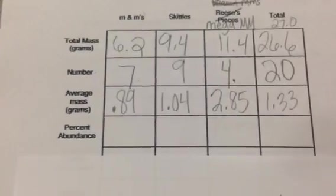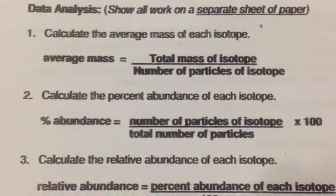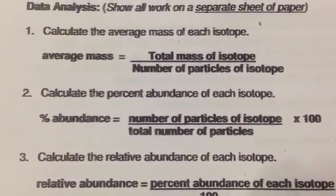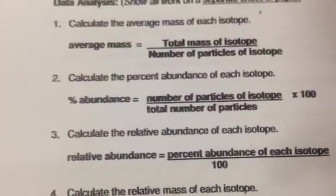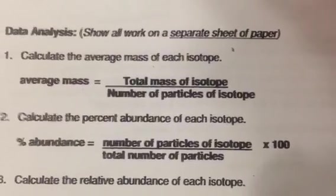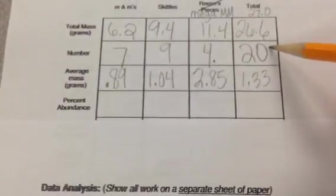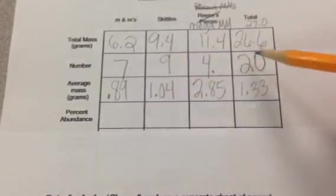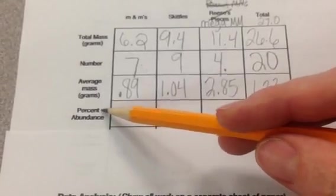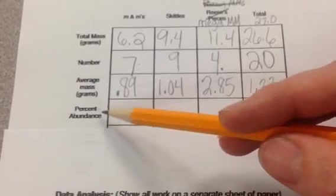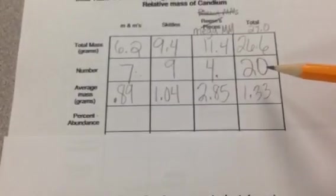Now your percent abundance is next, and again, you can just look at your formula sheet. Notice number 2 says percent abundance is the number of particles of isotope divided by the total number of particles times 100. This is basically just plugging numbers in. So number of particles of isotope is going to be this number, and they want us to take that and divide it by the total number of particles, which is going to be the same every time, which is 20. So this number divided by 20, and since we're doing a percent, you're going to multiply each of those answers times 100.